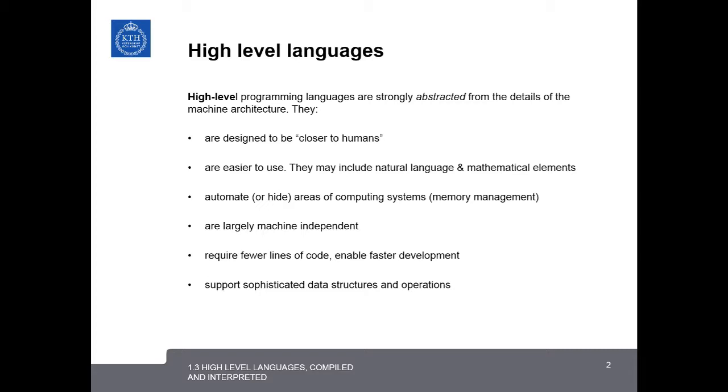This was the motivation for developing so-called high-level languages. High-level programming languages are strongly abstracted from the details of the machine architecture. They are designed to be closer to human language. They are supposed to be easier to use, and they may include natural language and mathematical elements. They automate or hide areas of the computing system, such as memory management.